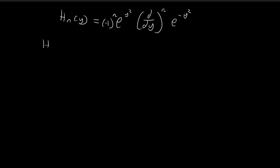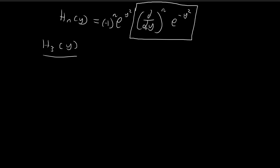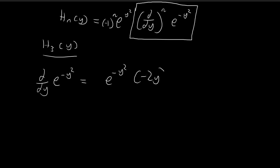The first thing we're going to find is the third Hermite polynomial. To do that, we need to evaluate the third derivative. So let's start with the first derivative of e to the power of negative y squared. Using the chain rule, we get e to the power of negative y squared, and then differentiating the exponent gives negative 2y, so we get negative 2y times e to the power of negative y squared.